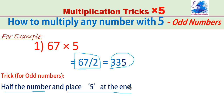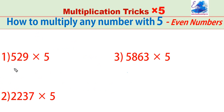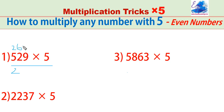The remaining process is the same. Let us see a few more examples with odd numbers. 529 into 5. Make it half: 264. And put 5 at the end. 2645 is the answer.